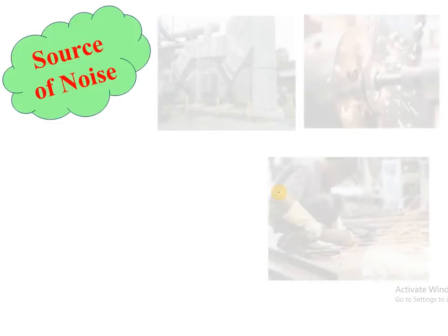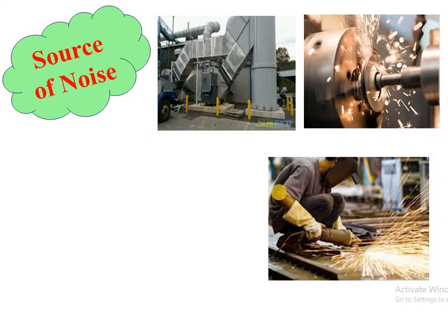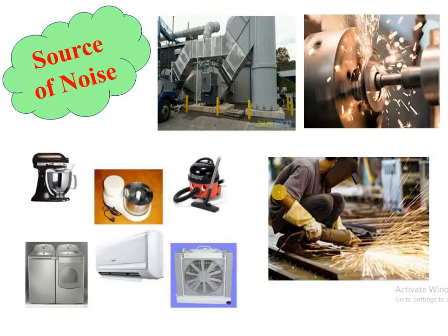Now let's talk about sources of noise. First is industrial noise. The images show how noise is generated during welding, lathe machines, various assembly work, and testing. Noise is created in the industry. The next source is home appliances — noise from mixers, vacuum cleaners, and washing machines.